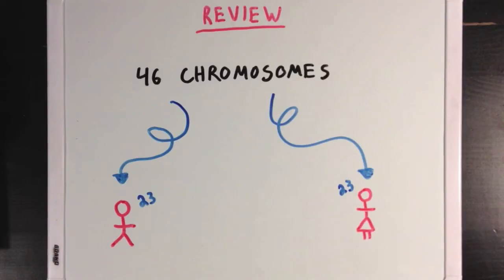Now sometimes we like to say that we have 23 pairs of chromosomes, instead of saying that we have 46 total, because that way we remind ourselves that for each chromosome we have a maternal and paternal copy.